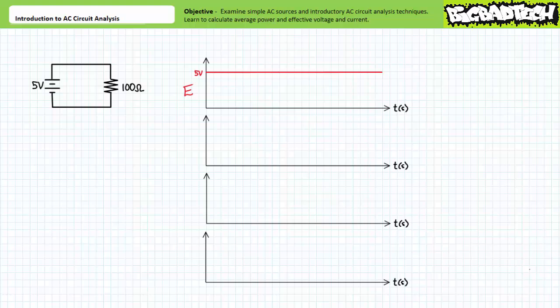We'll examine AC voltage sources that vary not only polarity but also magnitude as a function of time, and explore voltage, current, and power as they relate to AC circuit analysis. Finally, we'll learn to differentiate between average and effective voltage and current values supplied by an AC voltage source, and learn to calculate these values.